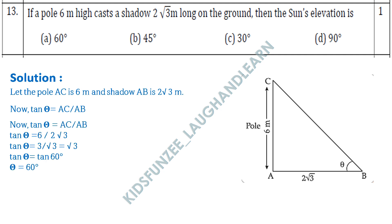So tan θ = AC/AB = 6 / (2√3) = 3/√3 = √3. We know that tan 60° = √3 — these values you need to memorize. So tan θ = tan 60°, which gives θ = 60°. The right option is option A.